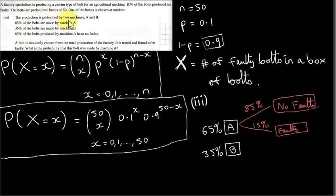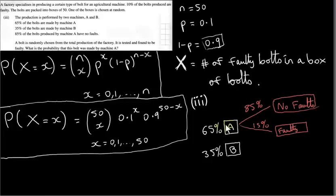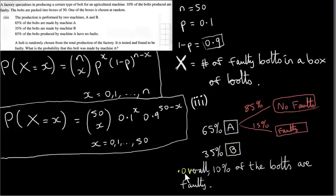The production is performed by two machines, A and B. 65% of the bolts are made by machine A, and 35% by machine B. 85% of the bolts produced by machine A have no faults, which means 15% from machine A are faulty. We don't know the breakdown for machine B, but we do know that overall 10% of all the bolts are faulty.